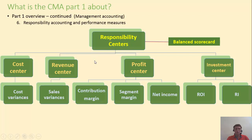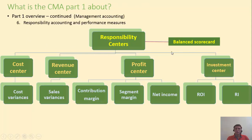We will see how different units of the business can be classified as cost centers, revenue centers, profit centers, and investment centers based on their financial responsibilities. We will learn additional performance measures used for these different units. And we're going to talk about the balanced scorecard, which includes both financial and non-financial measures for the performance of different responsibility centers.